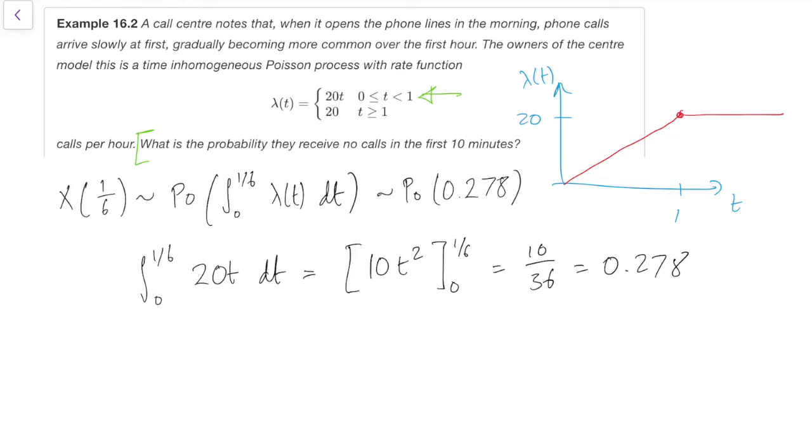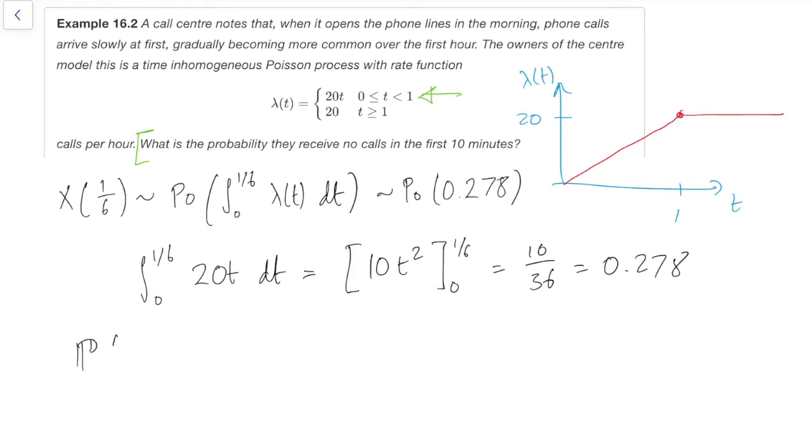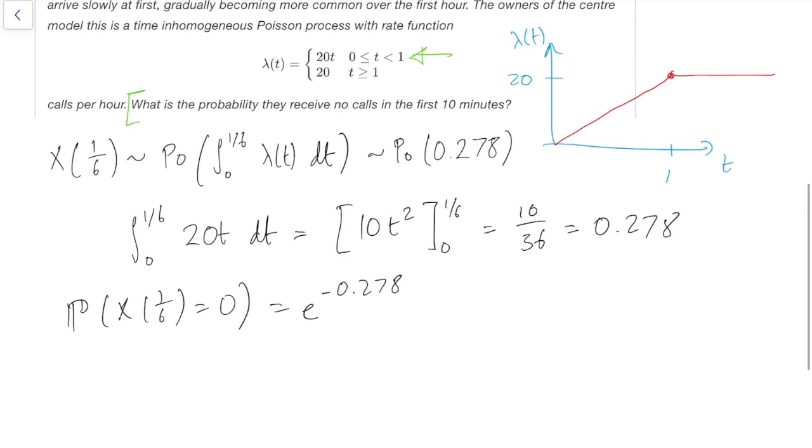But the question didn't ask for the parameter of the Poisson distribution. It asks for the probability there are no calls. So the probability that X of one-sixth equals zero equals... Well, you might have learnt by now that the probability of Poisson distribution is zero is just e to the minus its parameter. But if you did want to write it out fully, that's 0.278 to the zero over zero factorial, which is e to the minus 0.278. And I also typed that into my calculator earlier. Apparently it's 0.757. So about a three-quarters chance that the call centre receives no calls in the first 10 minutes.